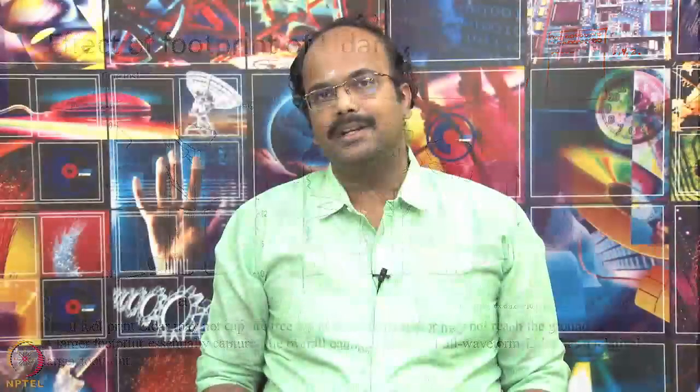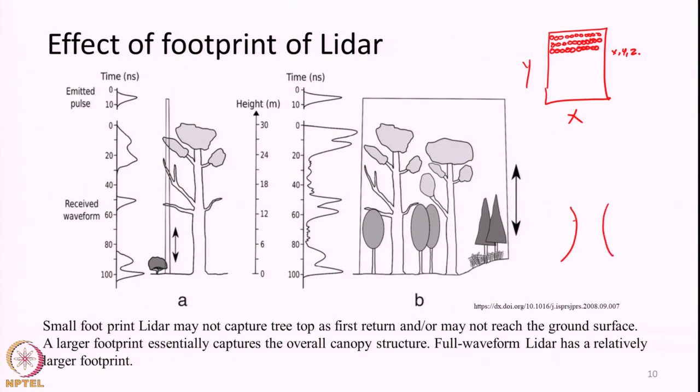Say the footprint size is on the order of 1 meter or 2 meters. Even a large tree will be captured properly within that 1-meter footprint. A footprint may fall on one part of the tree, the next footprint on another, and the next on another part, and so on. So a single tree is captured across multiple footprints, which may help us capture the terrain properly. For topographic surveying purposes, people naturally go for small footprint LIDAR — small footprint plus a dense point cloud — especially for topographic applications.